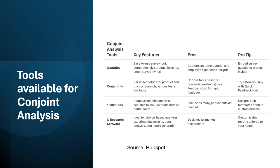SPSS is the most popular software for quantitative analysis, but there are other tools available for conjoint analysis. Qualtrics is an easy-to-use survey tool with comprehensive product insights and email survey invites — its advantage is capturing customer, brand, and employee experience data. Conjointly is a versatile toolbox used for product and pricing research and is very good for research-based questions.